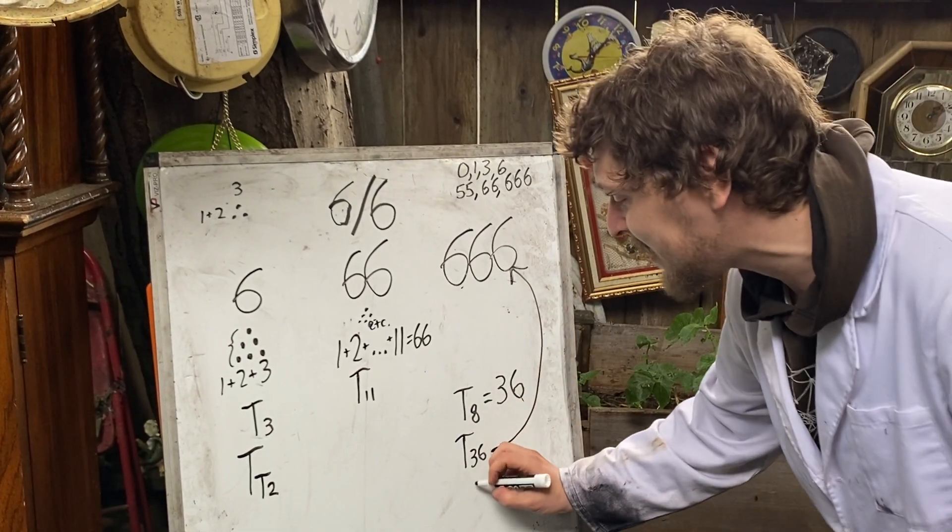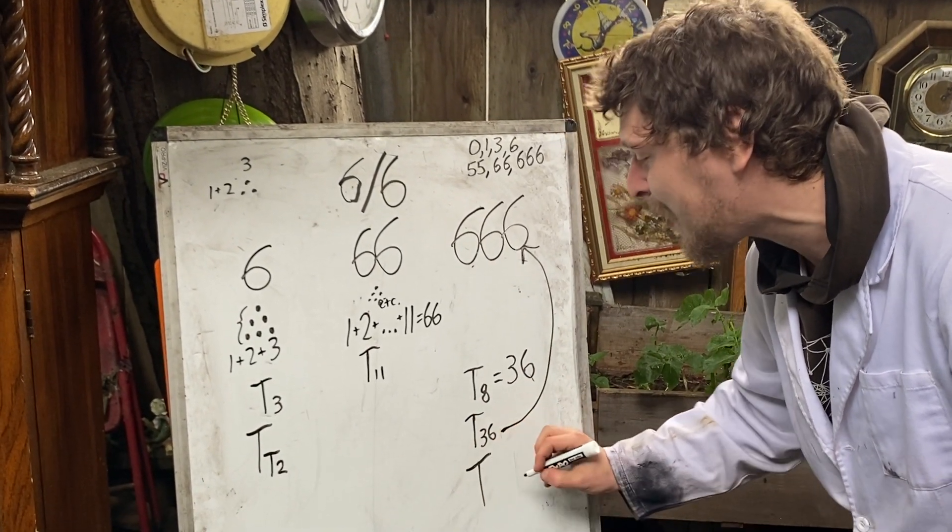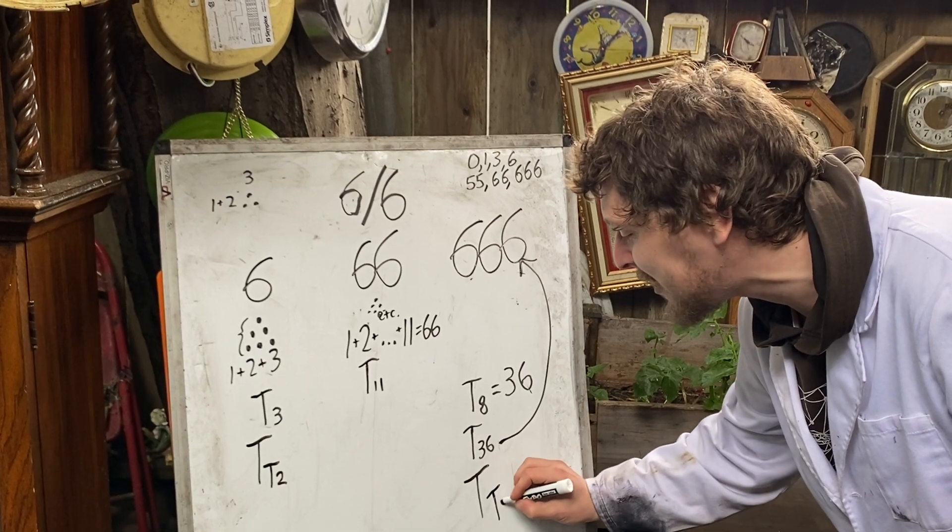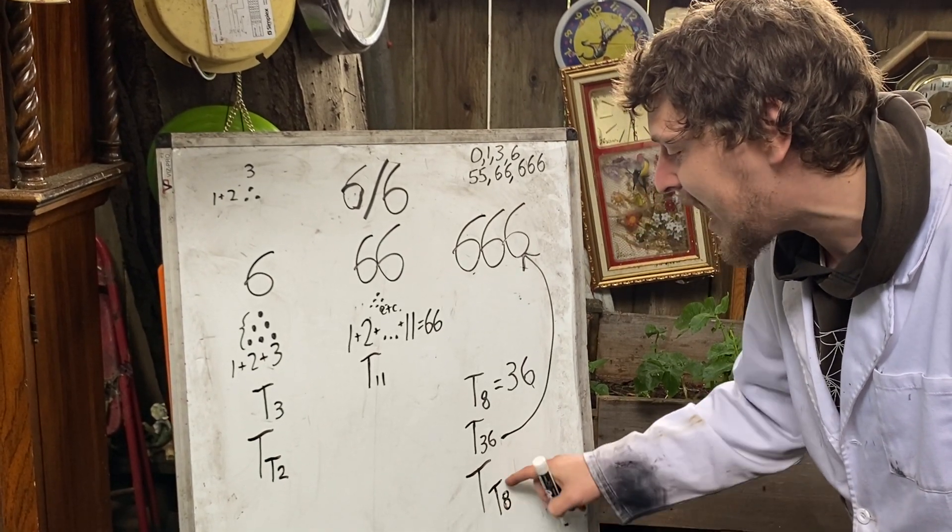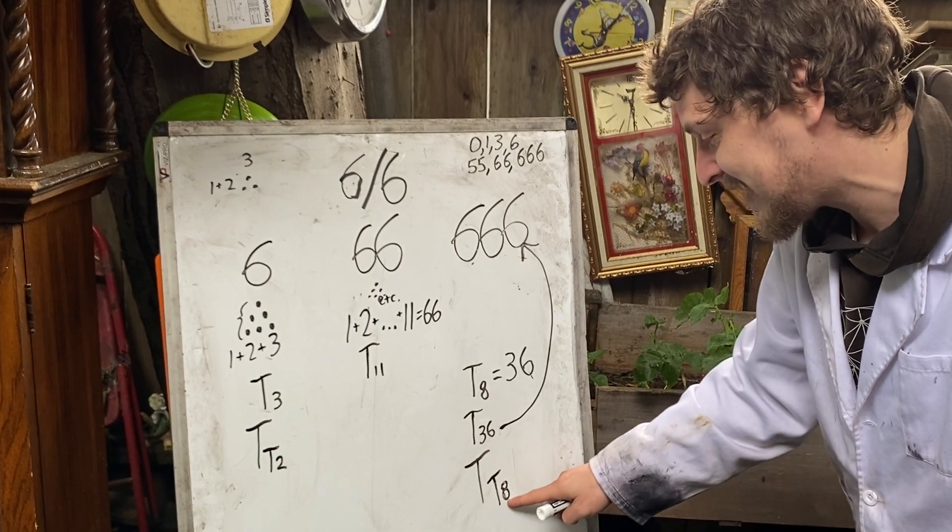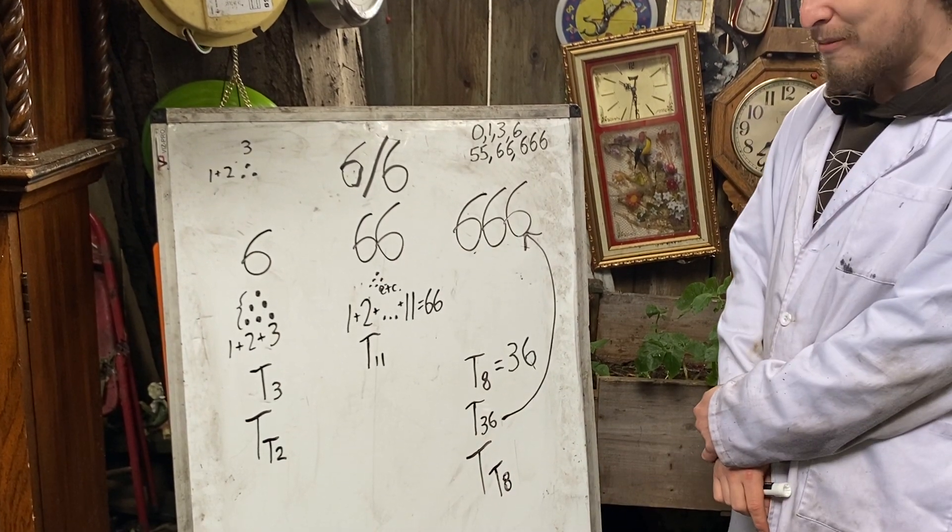So we could write it in the doubly triangular form. It is the triangular number whose index of which triangular number it is, is the eighth triangular number.